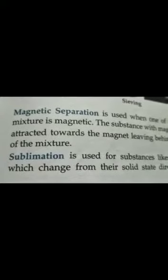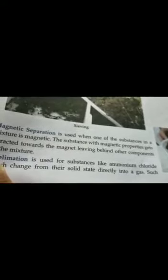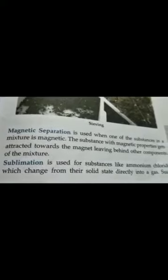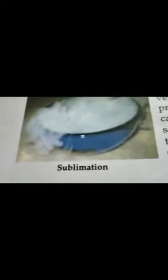The next method is sublimation. Naphthalene, widely used as a mothball in your home, is a sublimating substance — it directly changes into vapor from solid. Such materials can be separated from others using the sublimation method. If you heat the mixture, the naphthalene will directly change into gaseous form and as a result the common salt will be left behind.